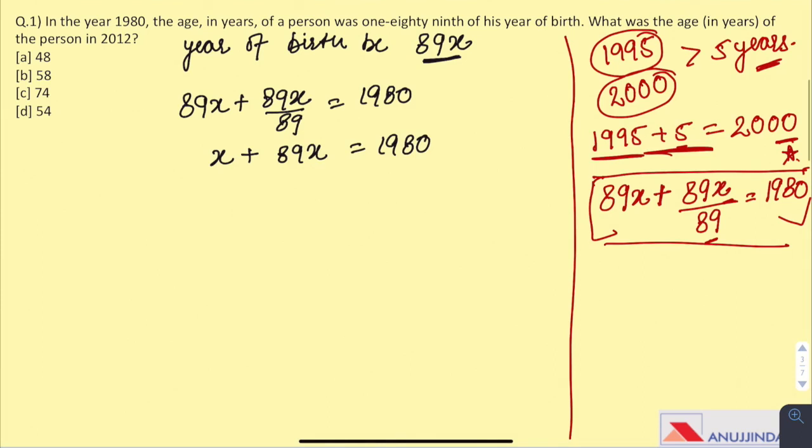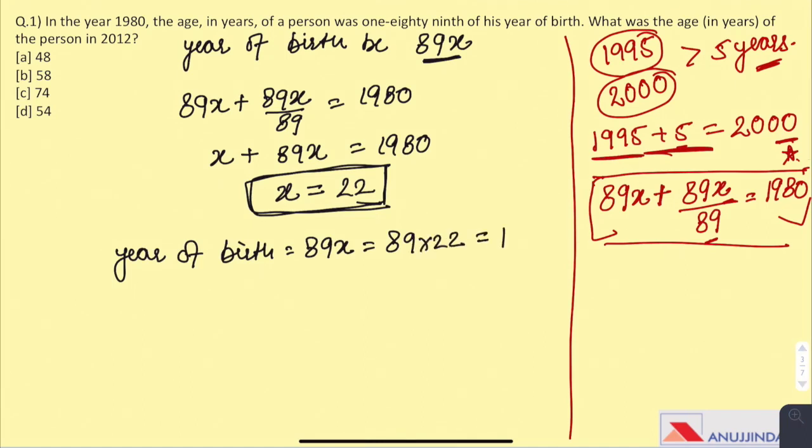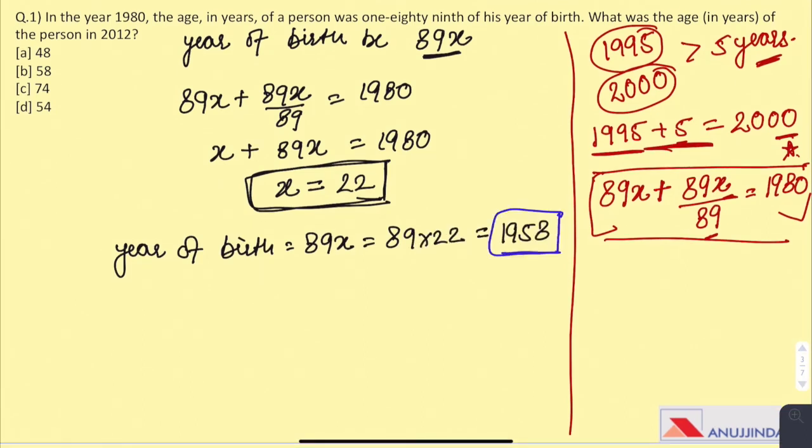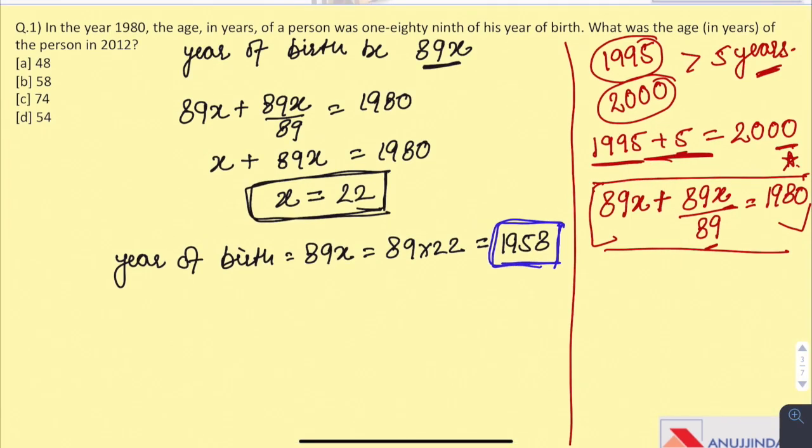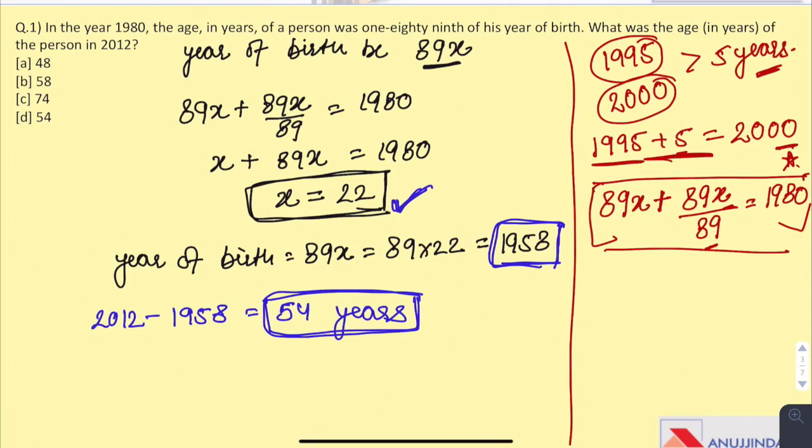On solving further, we get the value of x which is 22. And as per the question, the year of birth would be 89x, which is 89 into 22, which comes out to be 1958. And the age of the person in 2012 would be 54 years. This question can be easily solved once we get the value of x. The only tricky part was getting the equation, which I hope you have understood by this simple example.